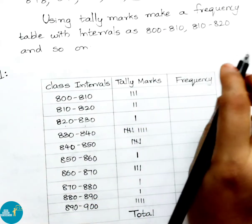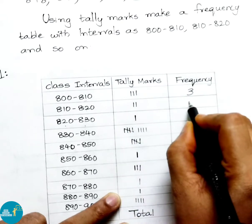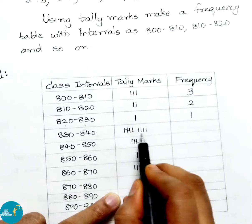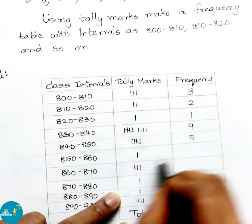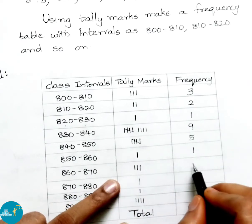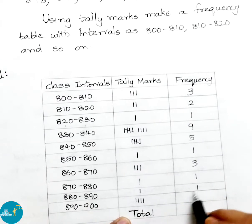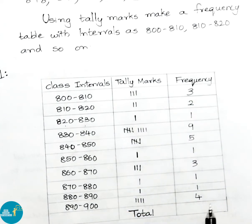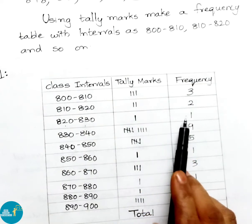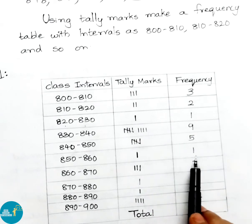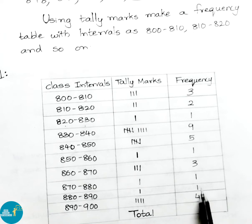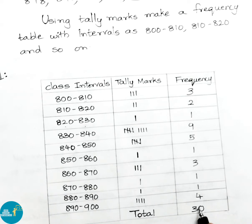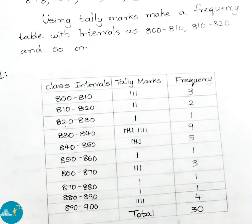Continuing the frequency count: 850–860 group = 1, next group = 3, then 1, then 1, and the last group = 4. Adding all frequencies: 3+2+1+9+5+1+3+1+1+4 = 30. The total is 30 workers, confirming our frequency distribution table is correct. We have represented the wages of different workers in the form of a frequency distribution table.